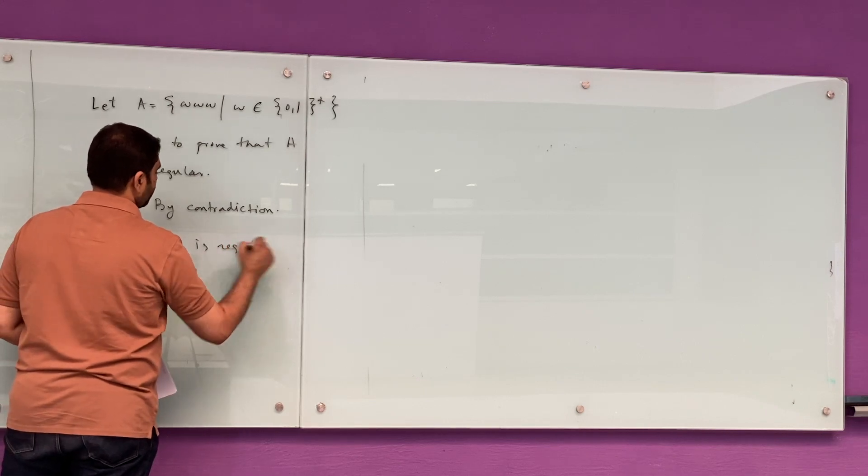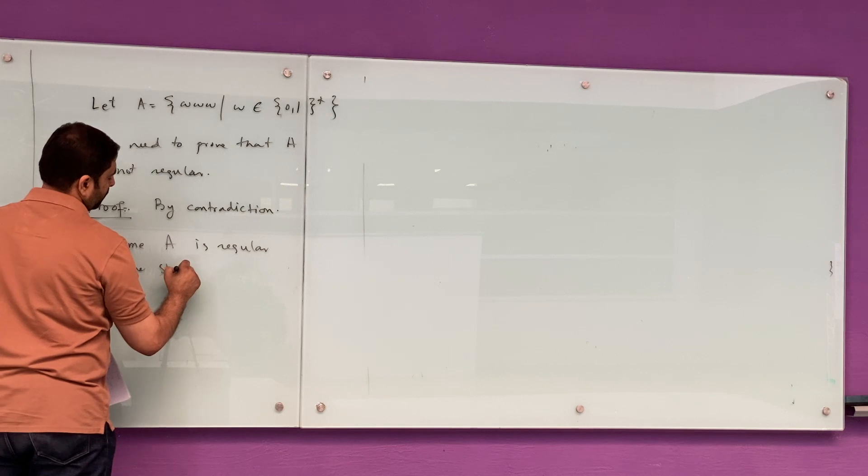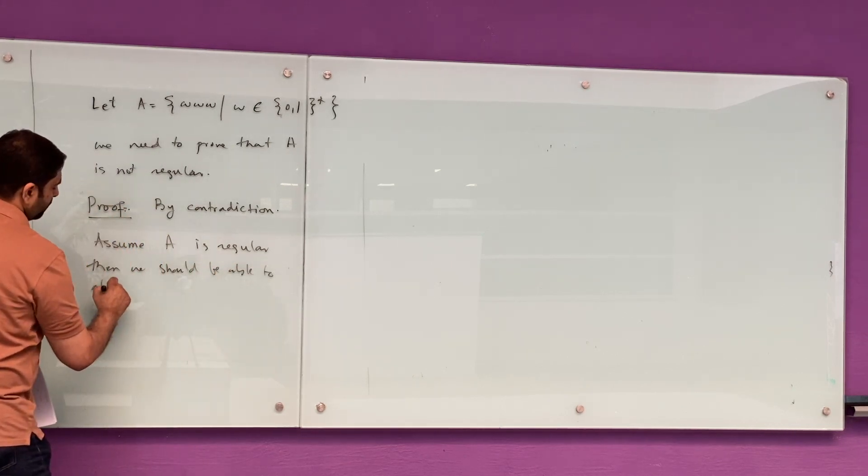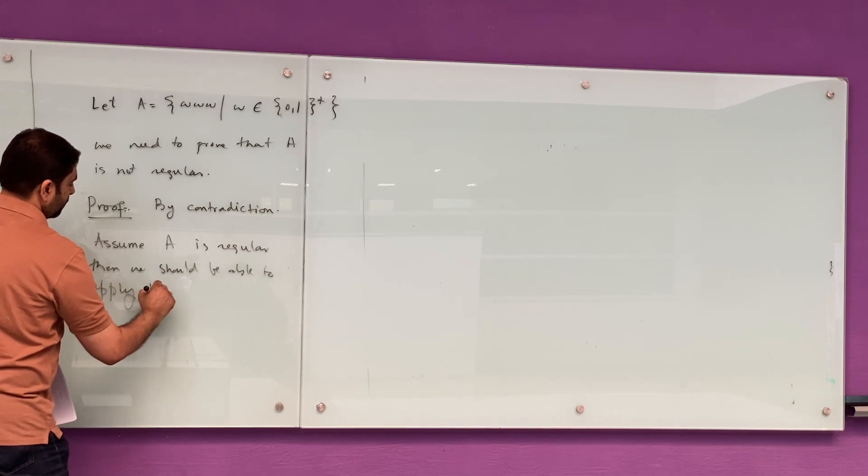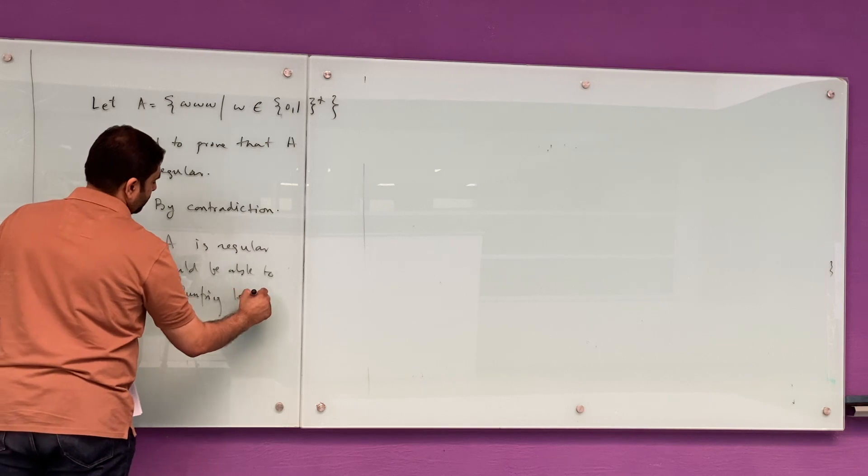The proof uses contradiction. Assume as a first step that A is regular.